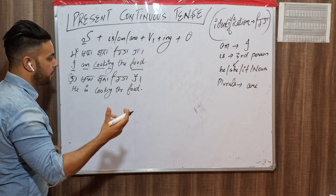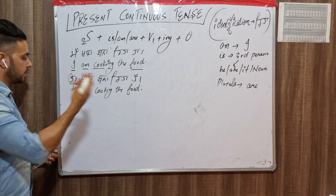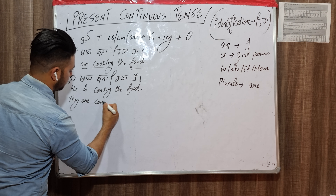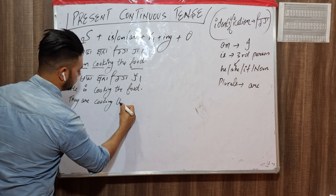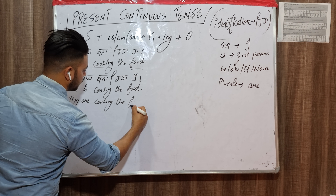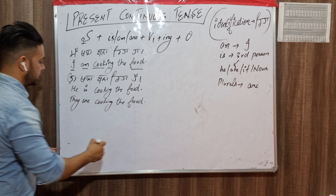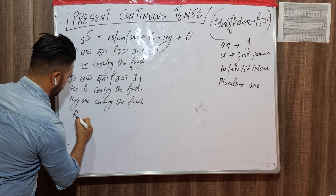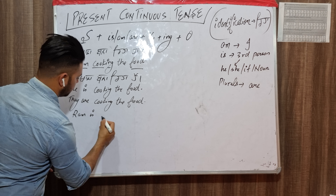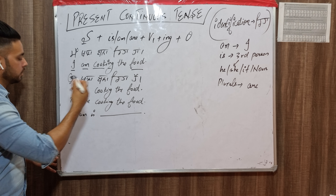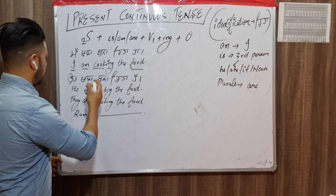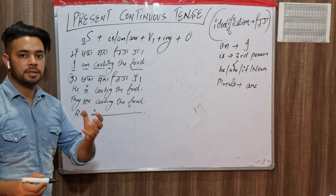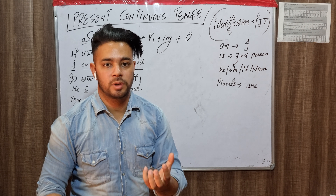For example: 'He is cooking the food.' 'They are cooking the food.' If someone has a name, like Ram — 'Ram is cooking the food.' If the subject is 'I,' you use 'am'; for he/she/it or a name, you use 'is'; for plurals, you use 'are.'